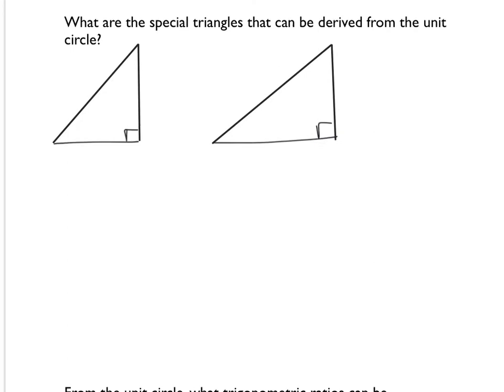The special triangles that can be derived from the unit circle come from 30 degrees, 45 degrees, and 60 degrees, as well as every 90 degrees. For 30 degrees — π over 6 — the complementary angle is 60 degrees (π over 3), and the special triangle has sides √3, 2, and 1. You should probably memorize these. The other interval is 45 degrees (π over 4), which gives an isosceles right triangle with sides 1, 1, and √2.